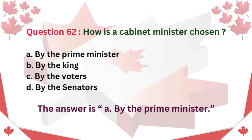Question 62: How is a Cabinet Minister chosen? A. By the Prime Minister. B. By the King. C. By the Voters. D. By the Senators. The answer is A: By the Prime Minister.